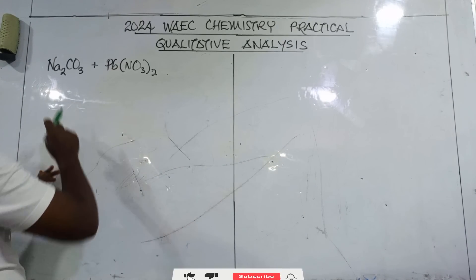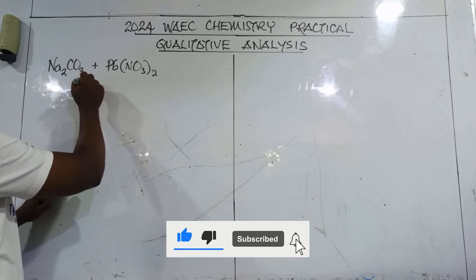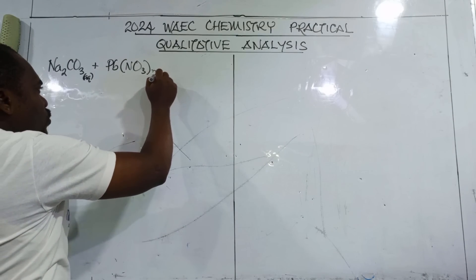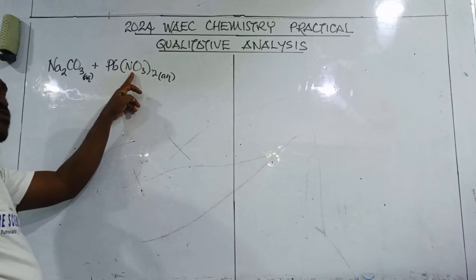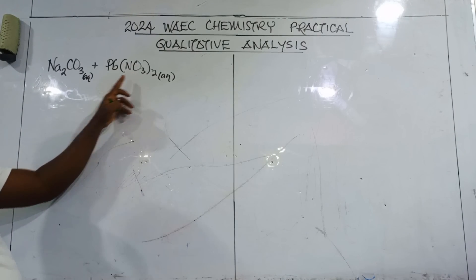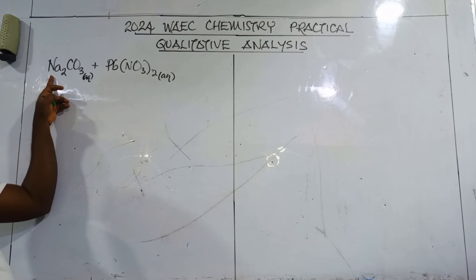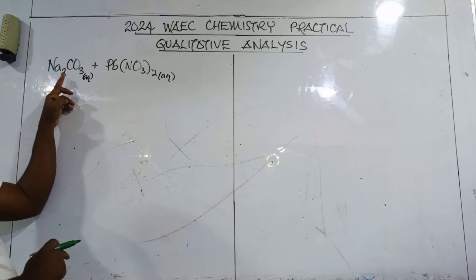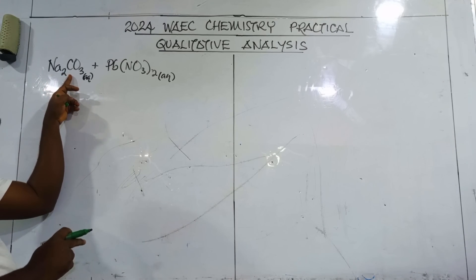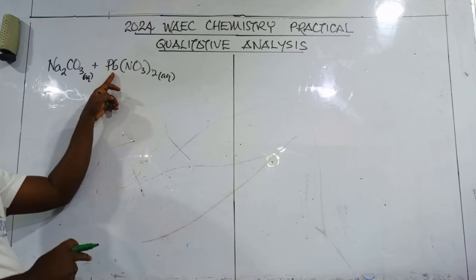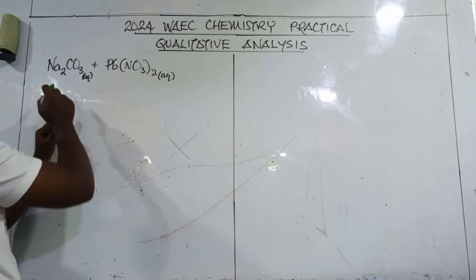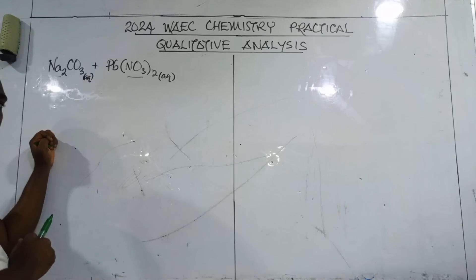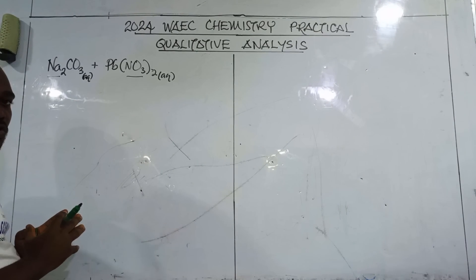These are two soluble salts. Sodium trioxocarbonate(IV) is soluble, and lead(II) trioxonitrate(V) is also soluble. Why? Because all trioxonitrate(V) salts are soluble, and all sodium salts — which is a group 1 metal — are soluble. Even though most carbonates are not soluble, because of the sodium ion and the nitrate ion in the two salts, they are both soluble salts.